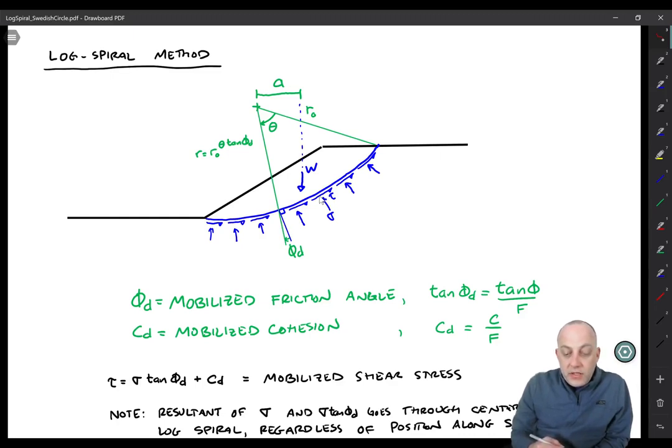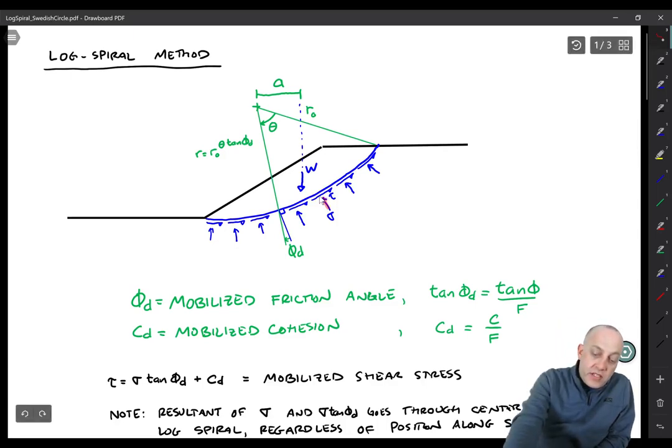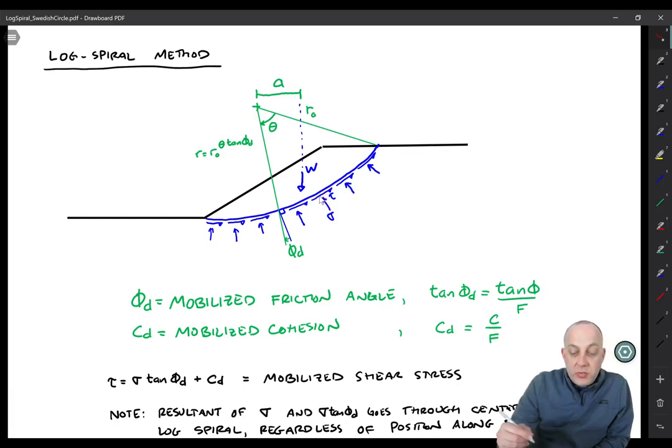Now let's take a look at some of the equilibrium conditions from the spiral. So we have a normal stress and a shear stress acting on each spot on this circle.